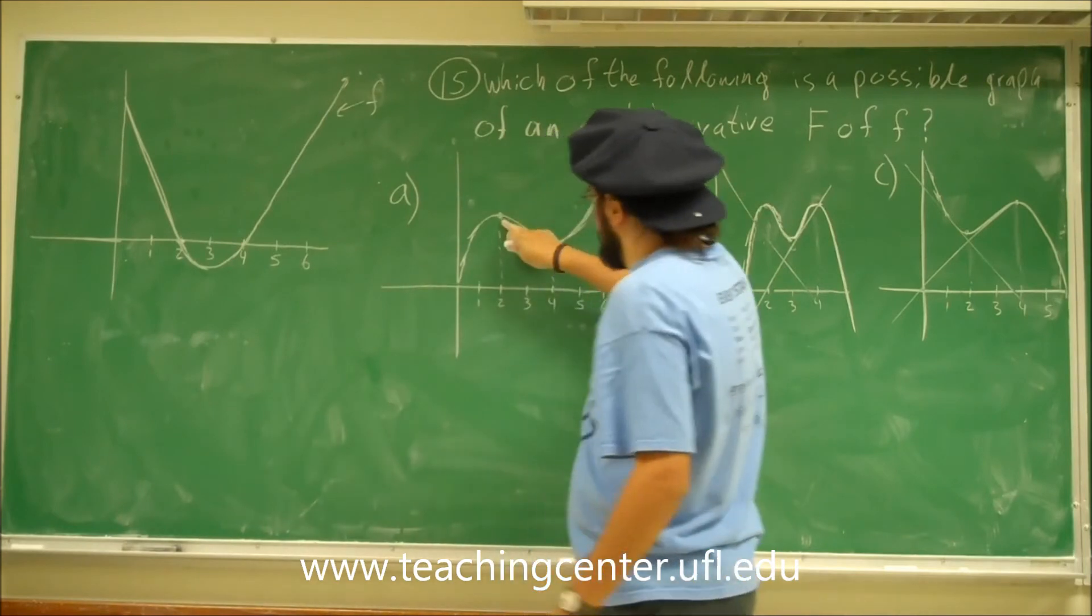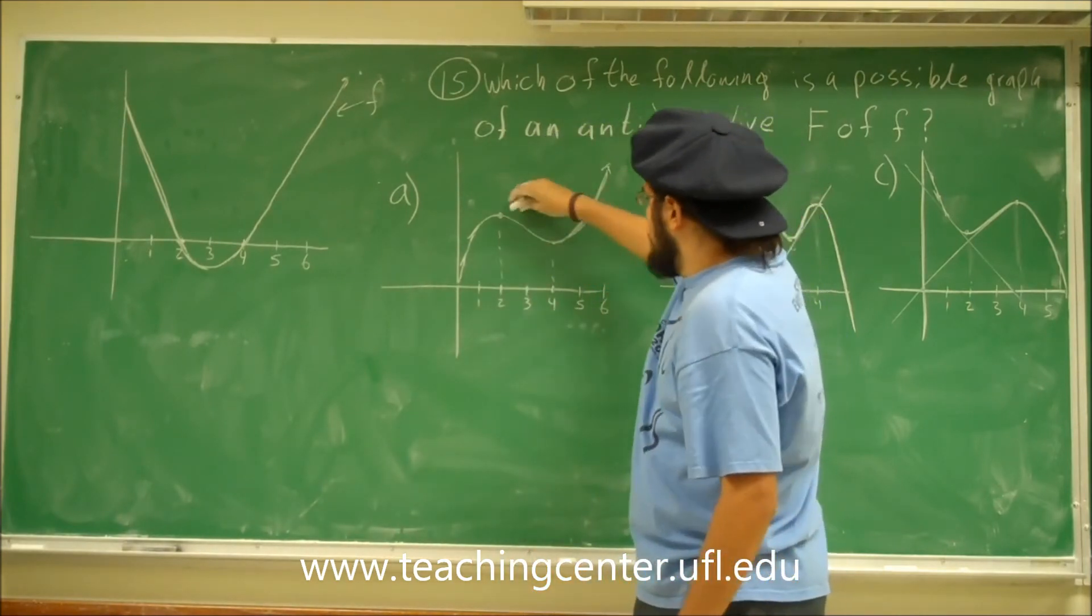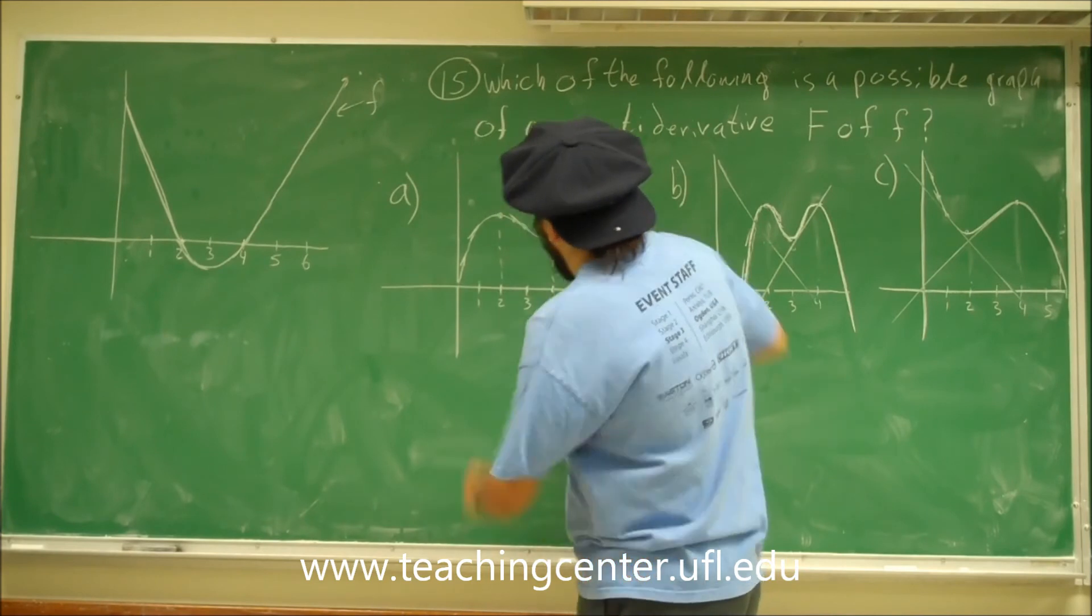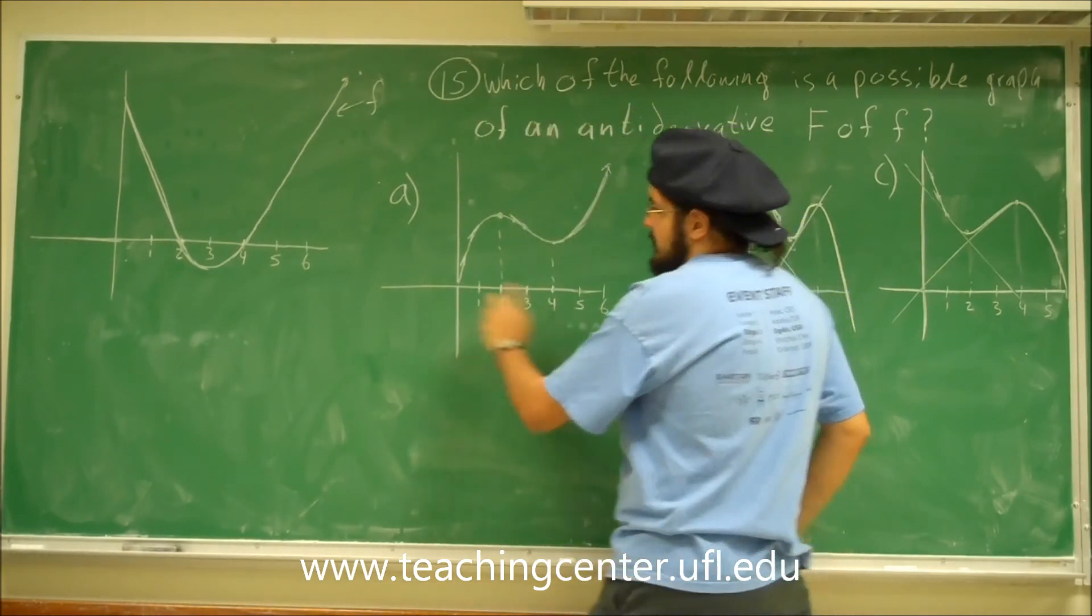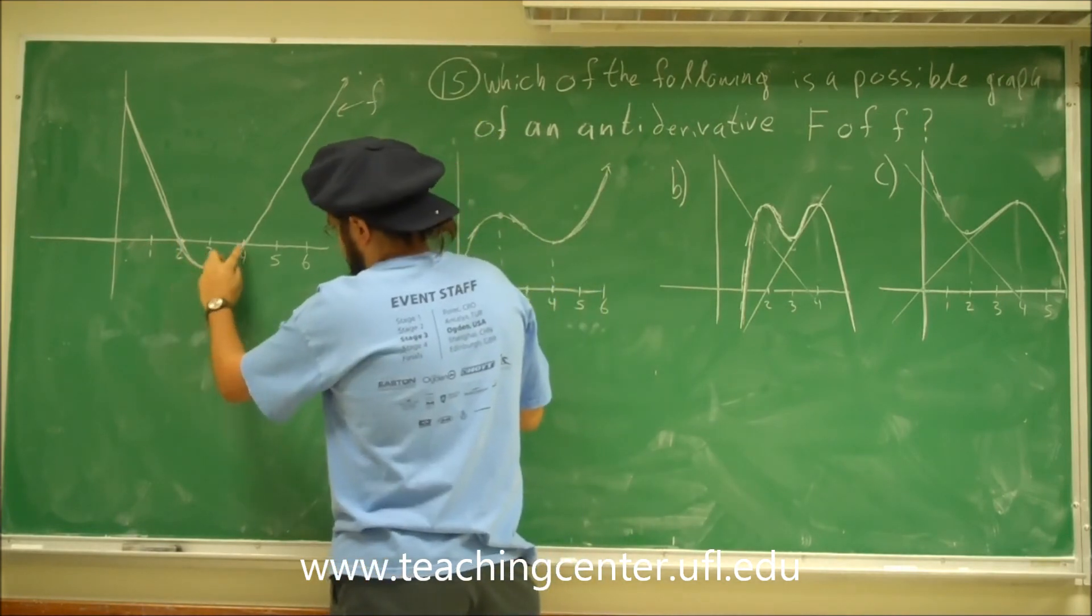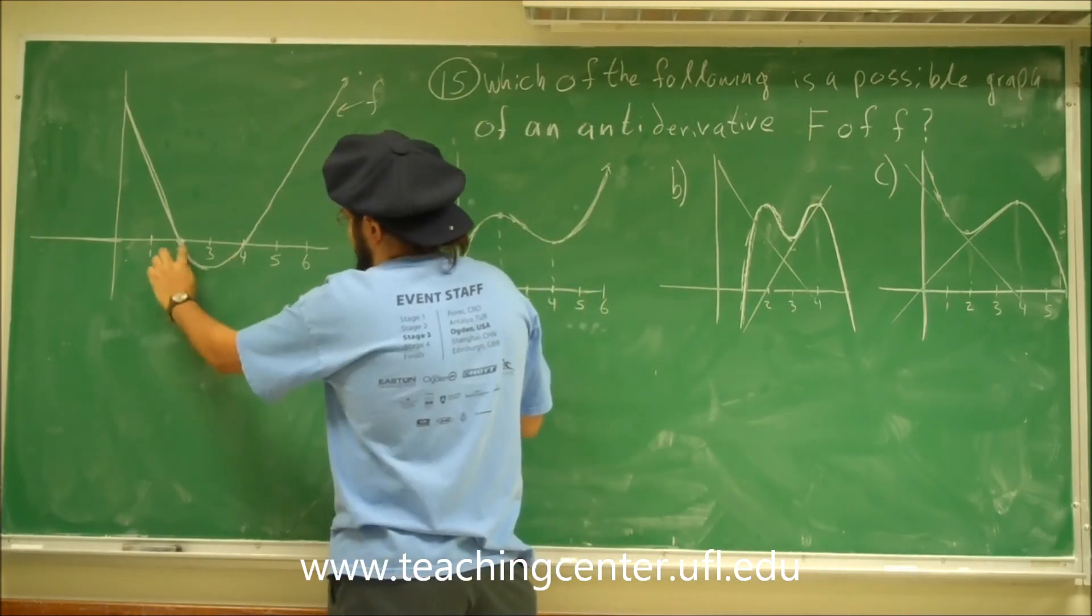At two, it's zero. At two, there's an extrema. That's good. And then it decreases. So the slope is negative from two to four. Right? Two to four. And from two to four here, it's negative. Yes. All these are negative values. So it's good.